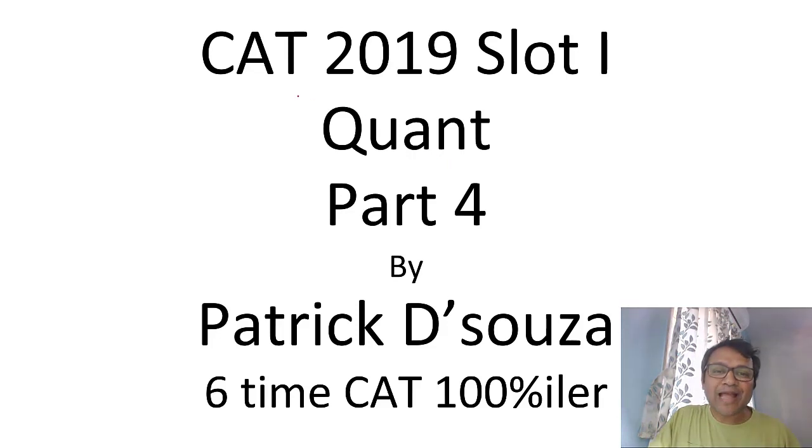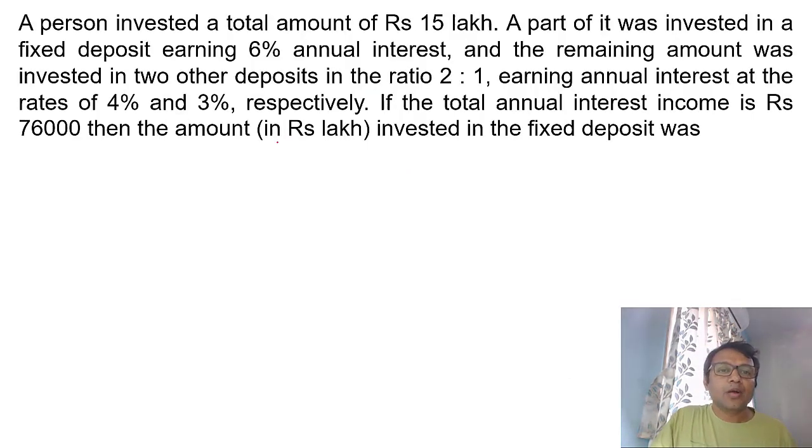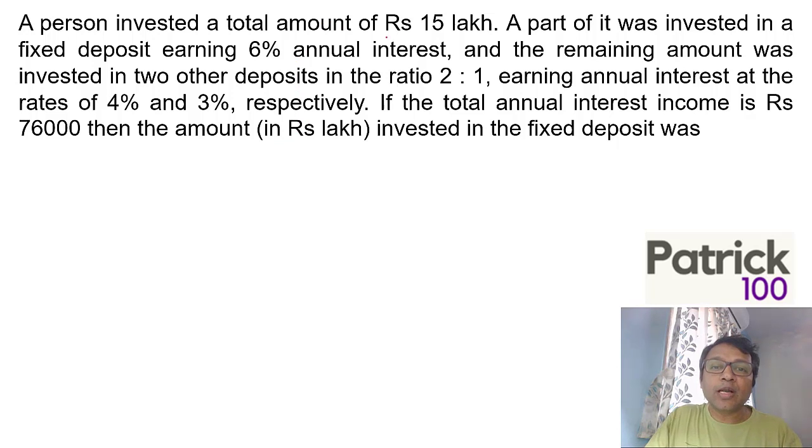We are solving some more questions of CAT 19 slot 1, part 4 of the series. We'll take up 5 questions and look at how to solve them. A person invested a total amount of 15 lakhs. A part of it was invested at fixed deposit at 6%, and remaining in two others in a ratio of 2:1 earning 4% and 3%.